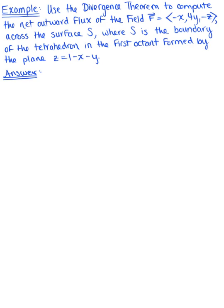Use the divergence theorem to compute the net outward flux of the vector field F equals (-x, 4y, -z) across the surface S, where S is the boundary of the tetrahedron in the first octant formed by the plane z equals 1 minus x minus y.